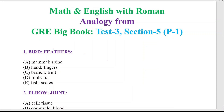First of all, we create the initial relation from the stem of the question. Then from the sub-choices, whichever answer has the closest relation to that relation, we will select that one. Other relations may exist, but we will pick the closest relation.